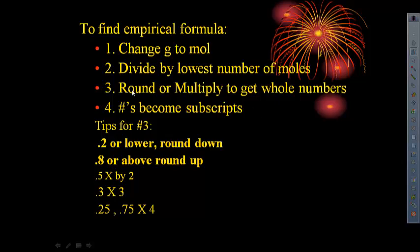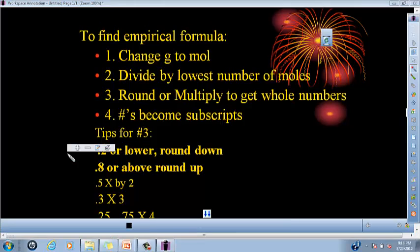Now, on number 3, this little multiply tip, you might need to come back here sometime during the video or in the future if you get confused. If you get a decimal of 0.5, we know that 0.5 is the common fraction 1 half. So in this case, you're going to multiply by 2 to get rid of it, because you can't have half of an atom.